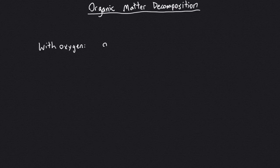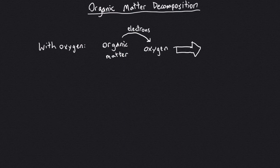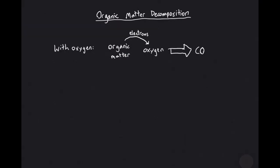As mentioned in the previous video, organic matter is decomposed by reacting it with oxygen to form carbon dioxide and water. In this reaction, the oxygen takes electrons from the organic matter. Because of this, it is called an electron acceptor.